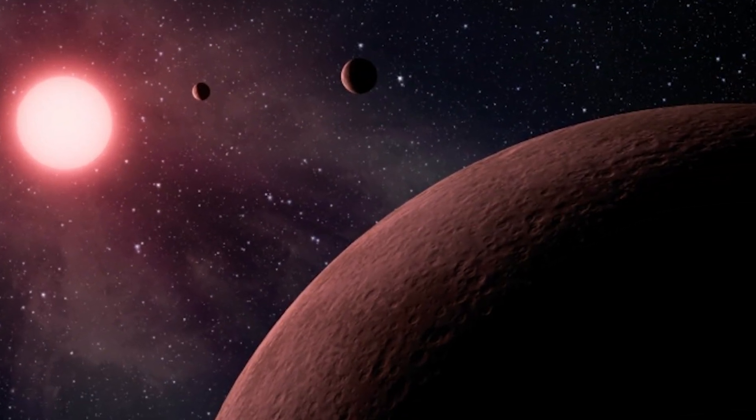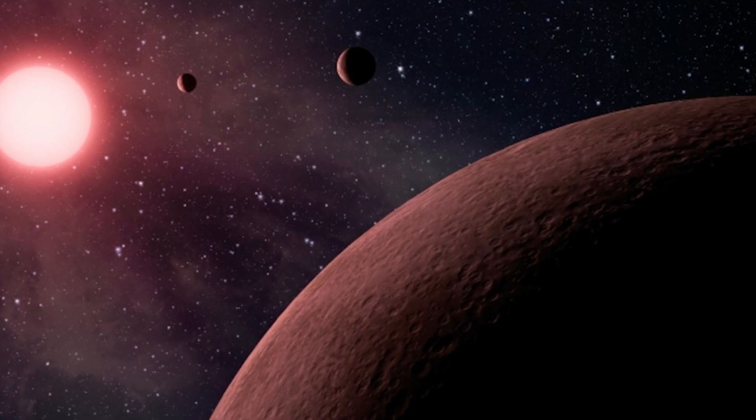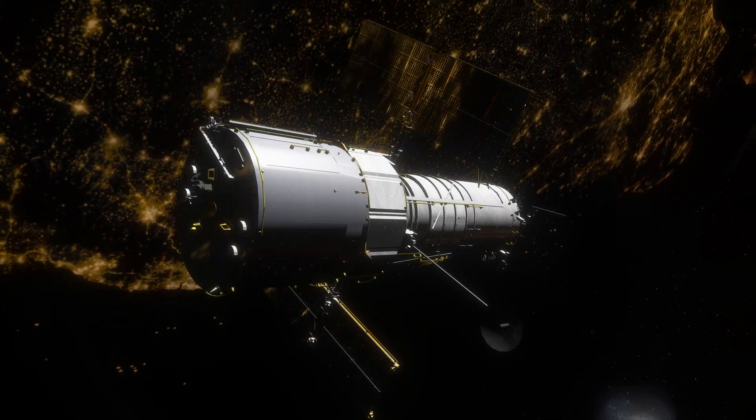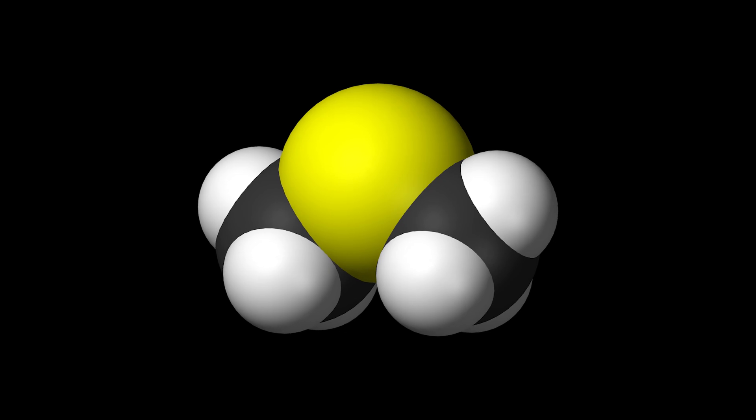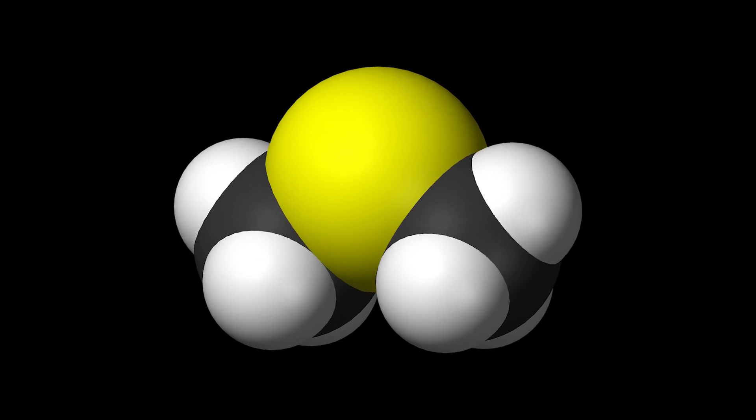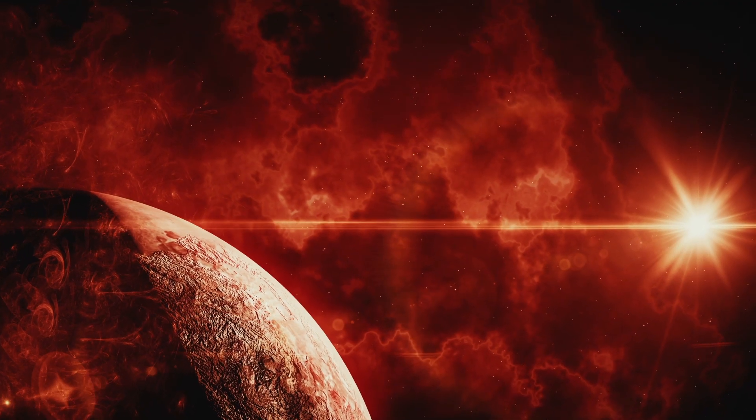The lack of ammonia and the presence of carbon dioxide and methane lend credence to Hubble's earlier findings. Webb may have also discovered dimethyl sulfide, or DMS. This is where it gets interesting.